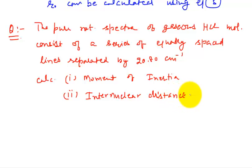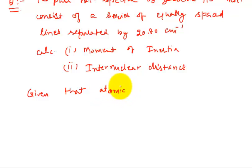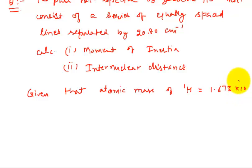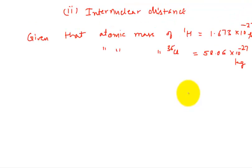You have to calculate the internuclear distance, provided that the atomic masses are given: the atomic mass of H¹ (proton) is equal to 1.673 × 10⁻²⁷ kg, and the atomic mass of Cl³⁵ is equal to 58.06 × 10⁻²⁷ kg. These are the masses of single atoms of hydrogen and chlorine.